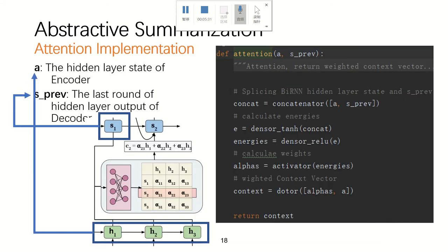And next I will talk about the attention implementation. So because Keras did not provide the attention layer, so we need to write it by ourselves. Our attention layer has two inputs, A and S prime. The A is the hidden layer state of encoder.